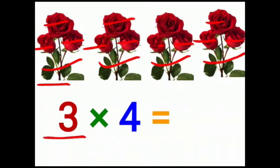Children, 3 roses, 4 bunches. 3×4 is equal to 12.